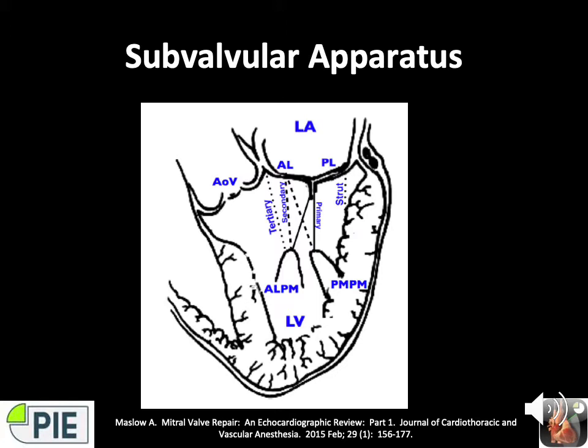The subvalvular apparatus comprises the papillary muscles (two) and the chordae tendineae (more than 100). First-order (primary) chordae attach to the ipsilateral leaflet edge, prevent prolapse of margins, and are responsible for normal coaptation. Second-order (secondary) chordae attach to the body of the leaflet, relieve excess tension, and are associated with the tethering effect of LV remodeling. Third-order (tertiary) chordae and struts attach to the base of the anterior and posterior leaflet respectively — this is the Maslow classification. The two papillary muscles are the anterolateral, which receives dual blood supply from the LAD and circumflex, and the posteromedial, which receives a single supply from the RCA and is more prone to ischemia.